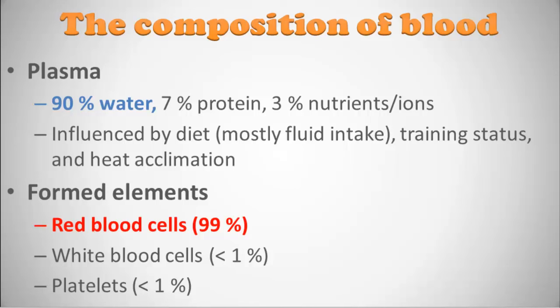You can influence sweat rate through your training status and how acclimated you are to the heat. When you go through a cutting protocol to make weight for a fight, you're primarily shifting the amount of water in your plasma first. There are going to be danger zones for how much water you can lose before your performance is affected — and ultimately whether you die or not. So plasma volume is pretty important.